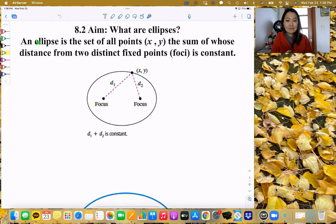So again, an ellipse is a set of all points or the locus of all points, the sum of whose distance from the two distinct fixed points, the distance from the two distinct points is constant. It's different from a parabola because it's got two focus, which is known as foci.